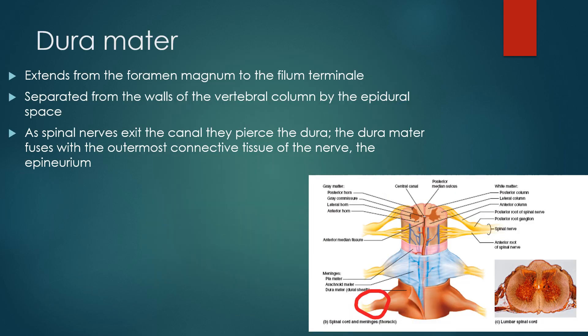The dura mater, the outermost meningeal layer of the central nervous system, extends from the foramen magnum to the filum terminale. It is separated from the walls of the vertebral column by the epidural space. As the spinal nerves exit the canal, they must pierce the dura, and the dura and the epineurium of those spinal nerves merge together.